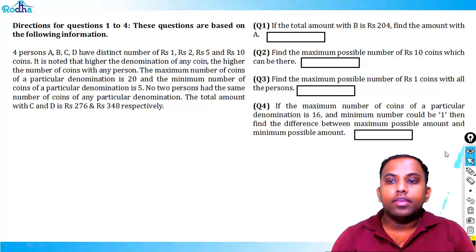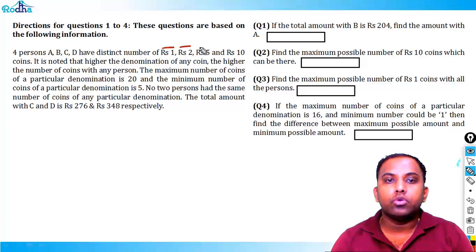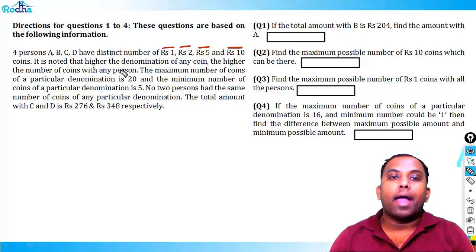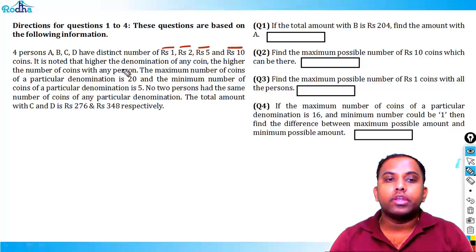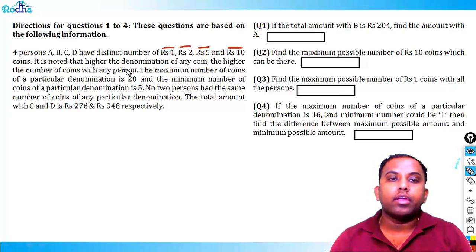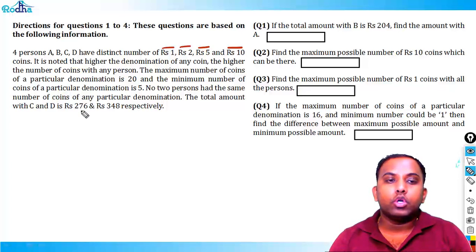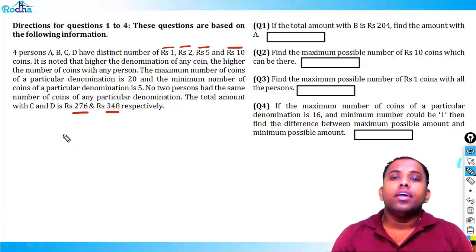Four persons A, B, C, D have distinct numbers of rupees 1, rupees 2, rupees 5, and rupees 10 coins. Higher the denomination of any coin, the higher the number of coins with any person. The maximum number of coins of a particular denomination is 20 and the minimum is 5. No two persons have the same number of coins of any particular denomination. The total amount with C and D is rupees 276 and rupees 348 respectively.